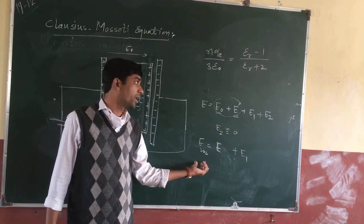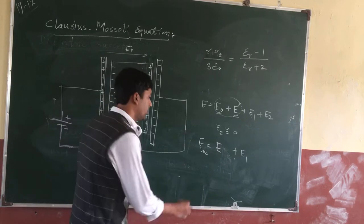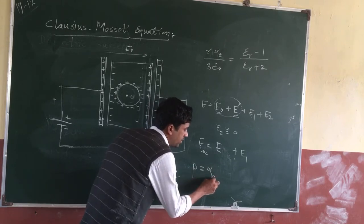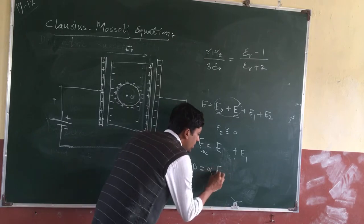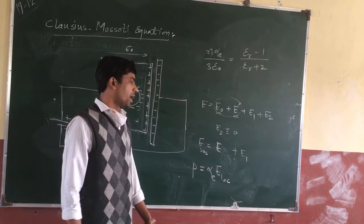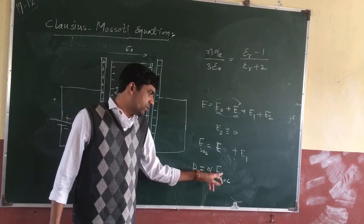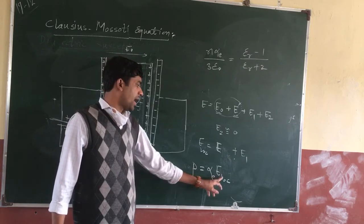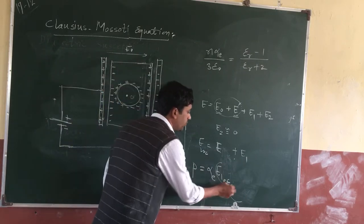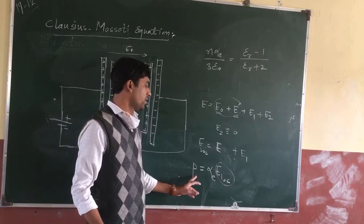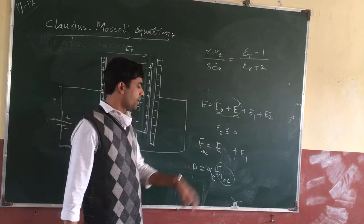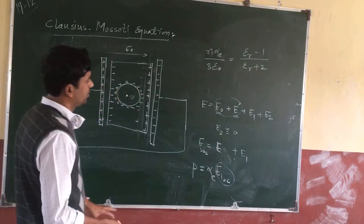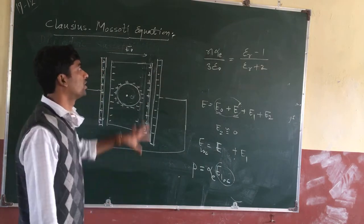From the local electric field, we find the polarization. Polarization is equal to the polarizability constant alpha_E multiplied by the local electric field. Substituting the expression for the local electric field into the polarization equation and rearranging gives you the Clausius-Mossotti equation. This is the basic idea behind deriving the Clausius-Mossotti equation.